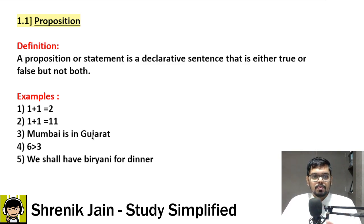Similarly, example 3, Mumbai is in Gujarat, a false sentence plus a declaration, so proposition. Fourth example, 6 is greater than 3. Yes, it's a declaration and a true sentence. So proposition.